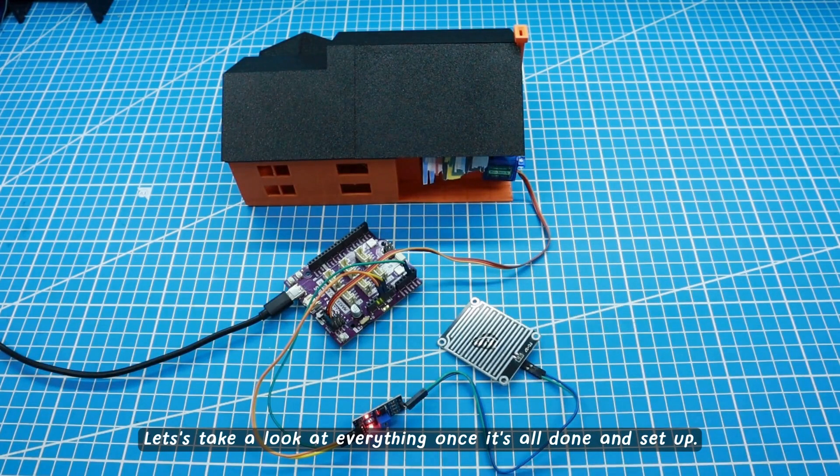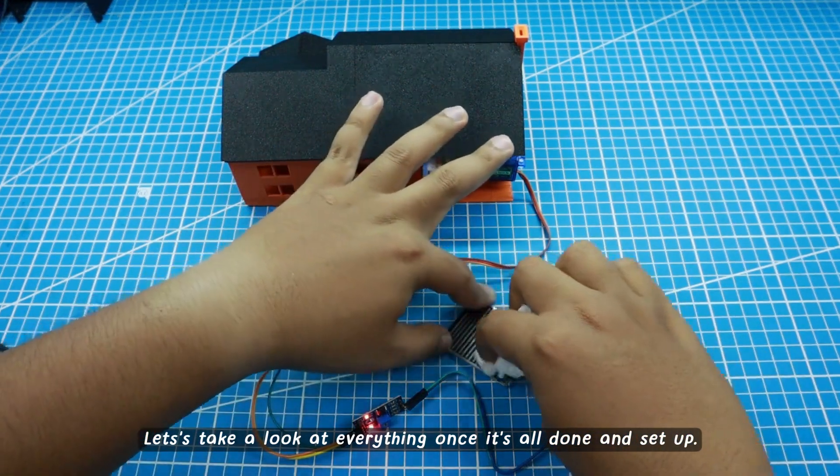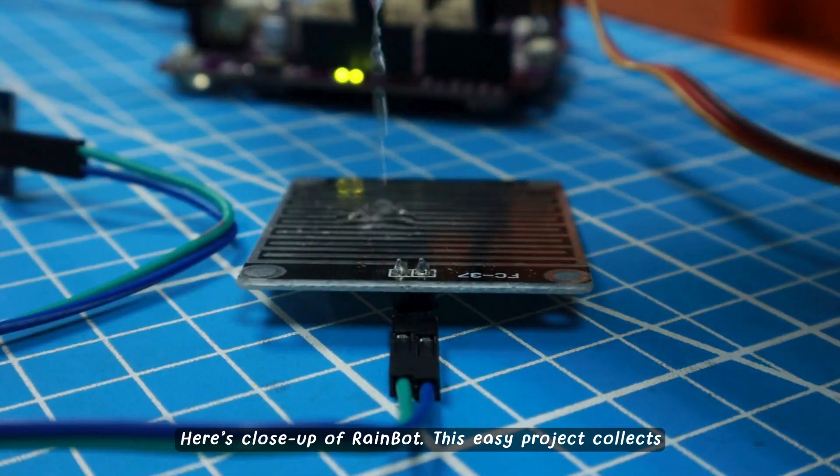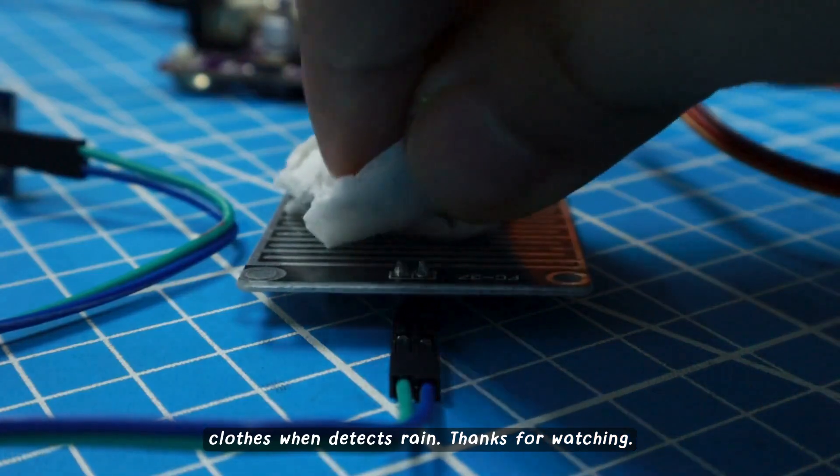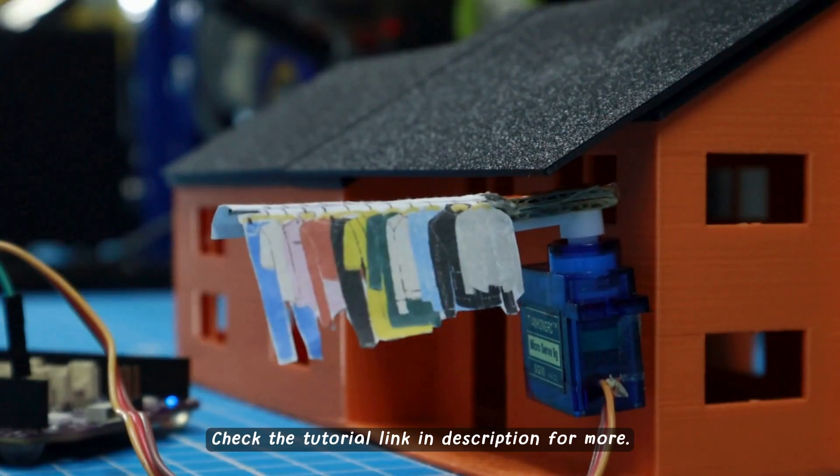Let's take a look at everything once it's all done and set up. Here's a close-up of the rainbot. This easy project collects clothes when it detects rain. Check the tutorial link in the description for more.